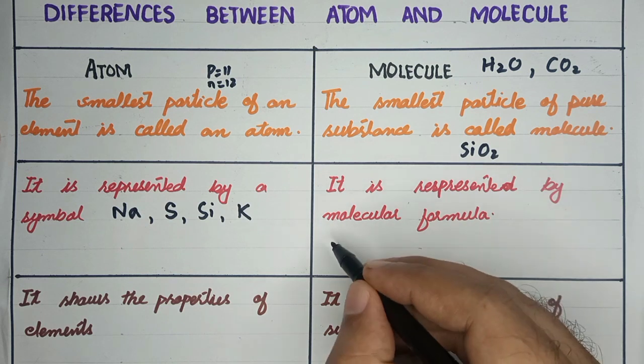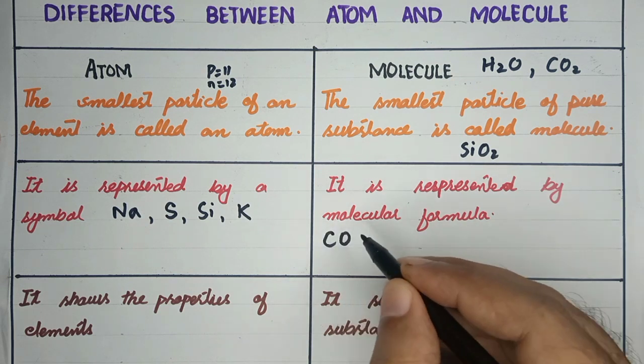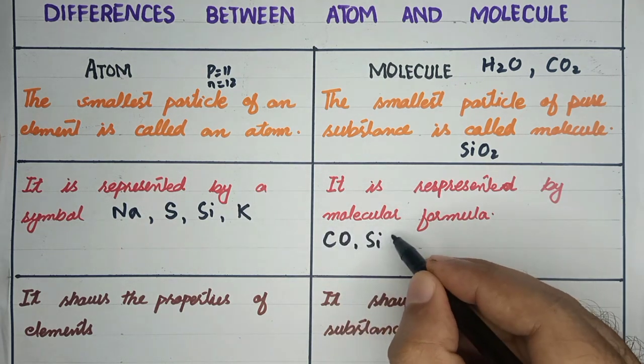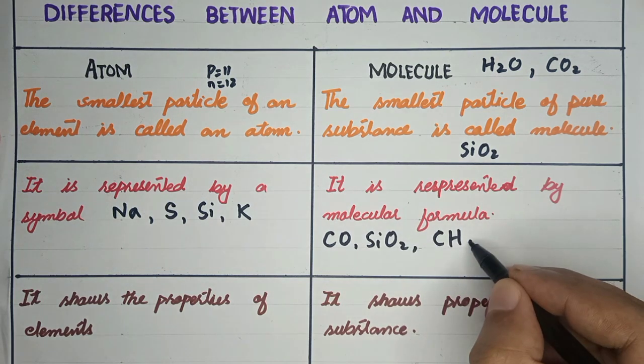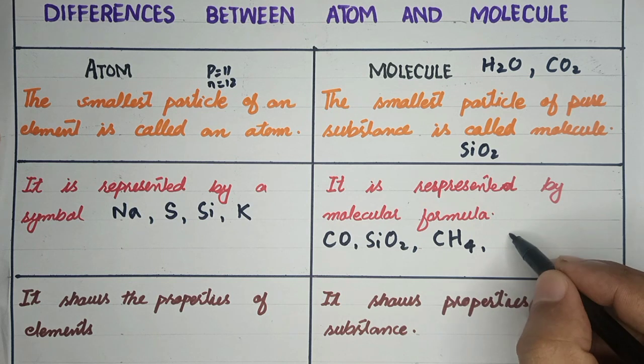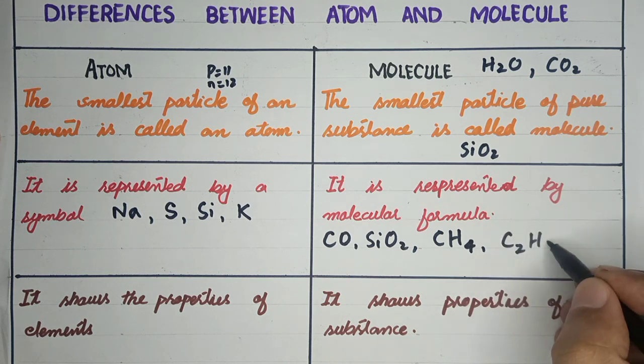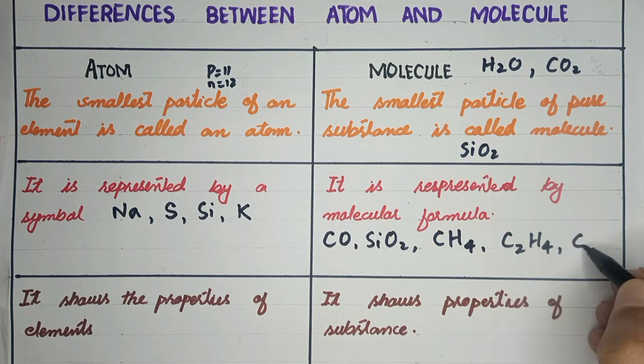Molecules are represented by molecular formulas. Carbon monoxide is CO, sand is SiO2, carbon dioxide is CO2, methane is CH4, ethane is C2H4, hexane is C6H14.